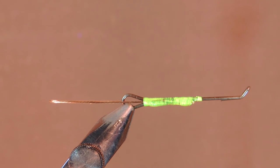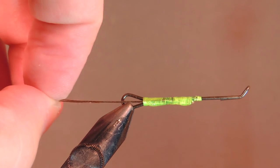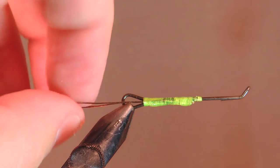The important part is to make sure that we fold back those tag ends. That really secures that. Once this is dry it's going to be almost indestructible.